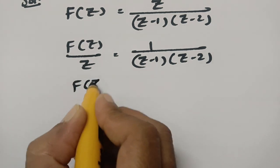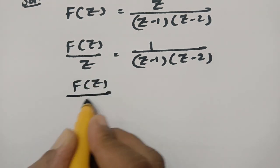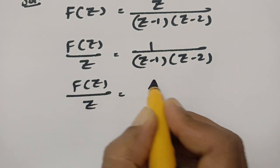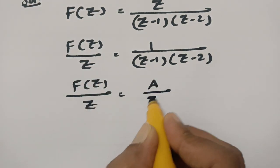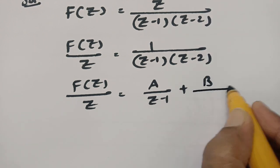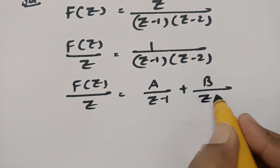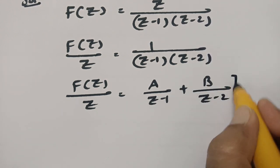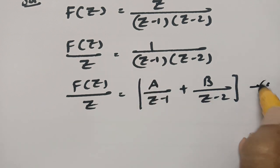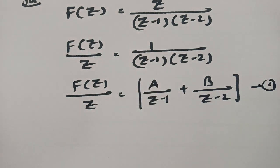So F of Z by Z can be written as A by Z minus 1 plus B by Z minus 2. Keep this equation as equation 1. Now we will find out the values of A as well as B.